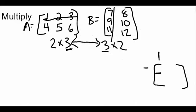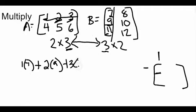We do 1 times 7, plus 2 times 9, plus 3 times 11. So it's the first item in the first row, first item in the first column. Second item in that row, second item in the column, third item in the row, third item in the column.